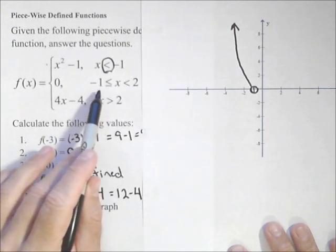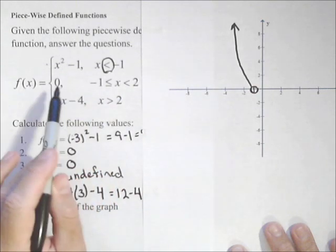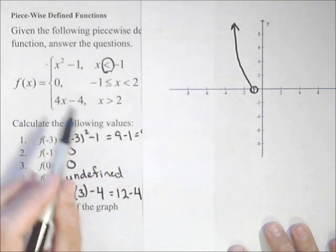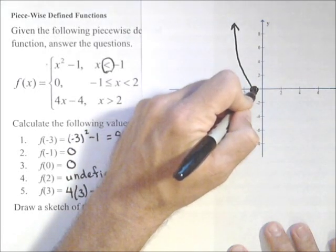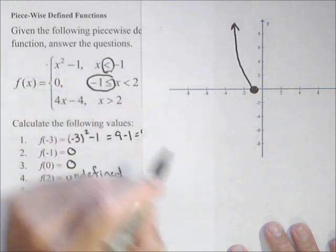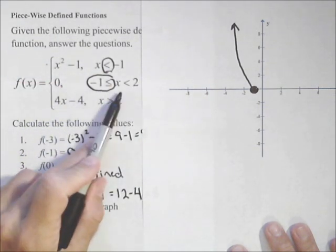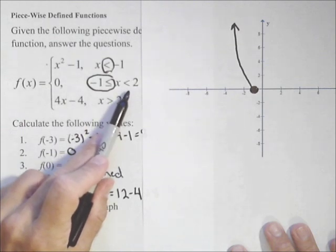Now, next, we're seeing what's going on between negative one and two. At negative one exactly, it's zero. So this allows us to have a closed-in circle at negative one, because of this right here. Now our function is just zero all the way up until two, but not including two.